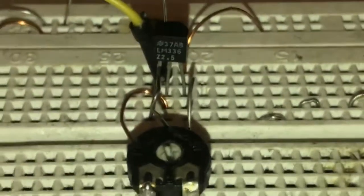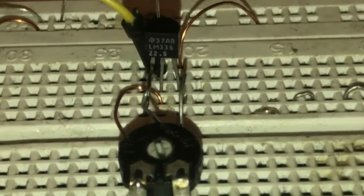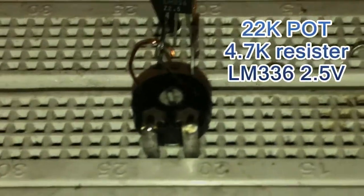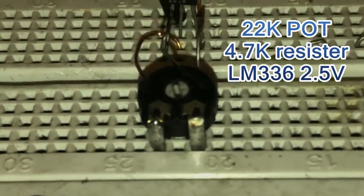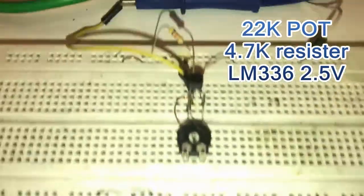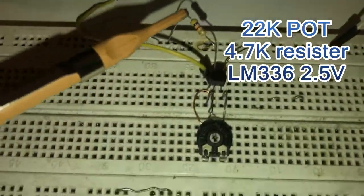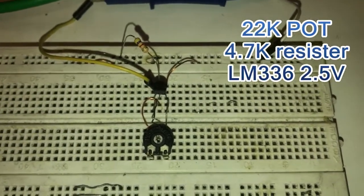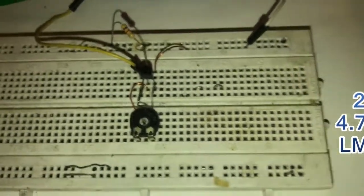As you can see, the project is super simple. Only transistor, 22k pot, and 4.7k resistance. Like all other transistor-based voltage references.